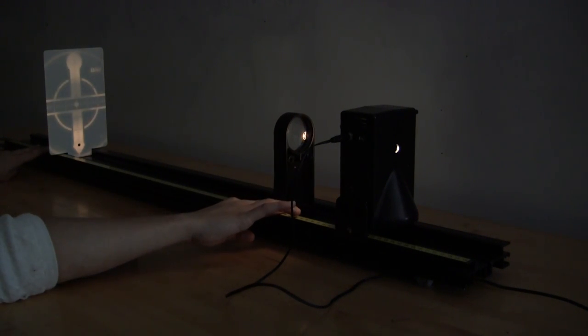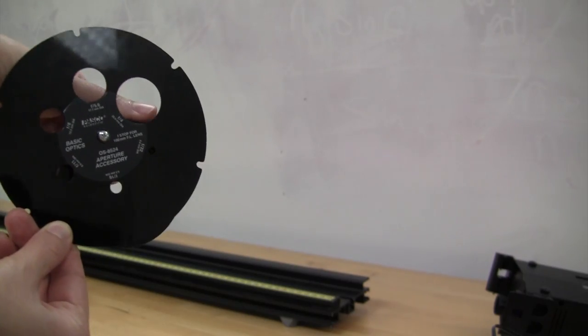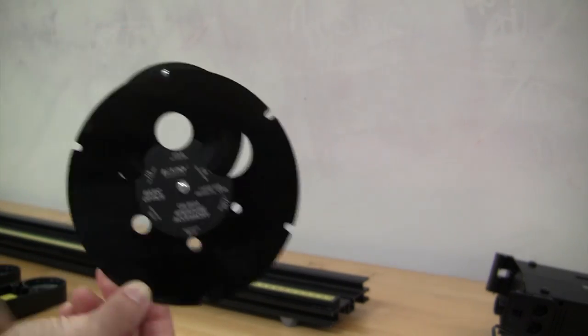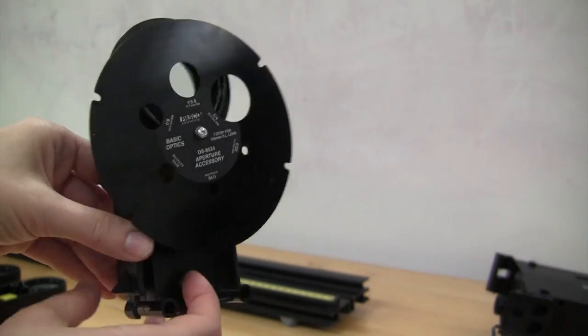Additionally, you will use this setup to measure the depth of field of the lens, both with and without an aperture placed over the lens. This aperture wheel allows you to choose between different sizes of aperture. It can then be snapped onto the lens. How do you think placing an aperture on the lens will affect the depth of field?